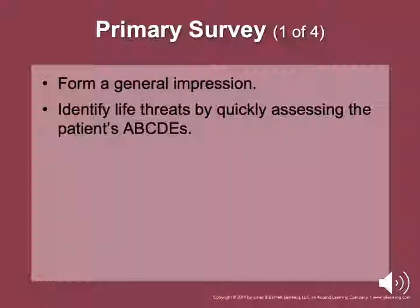Form a general impression. Keep in mind that many medical patients may not appear serious at first. Determine the patient's level of consciousness using the AVPU scale — Alert, Verbal, Painful, and Unresponsive. Identify life threats by quickly assessing the patient's airway, breathing, circulation, disability, and exposure.